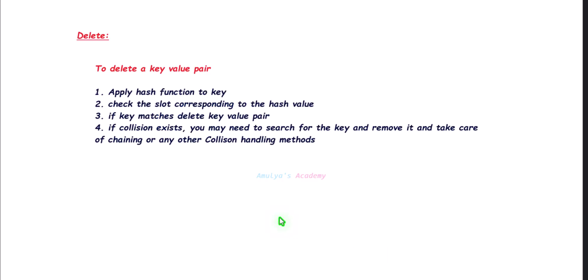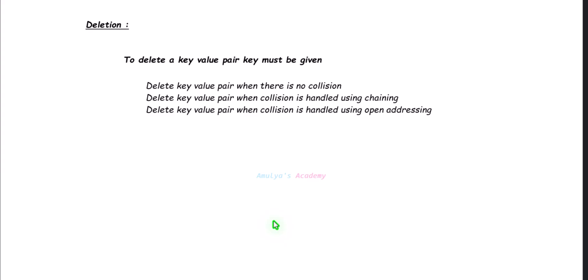To delete a key-value pair, the first step is to apply the hash function to the key and find the index. Next, check that slot at that index. If the key matches, delete the key-value pair. If a collision exists, you may need to search for the key, remove it, and take care of chaining or any other collision handling method. The key must be given to delete the key-value pair.